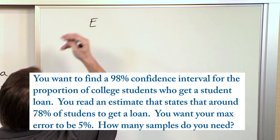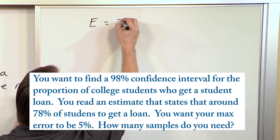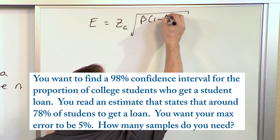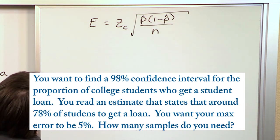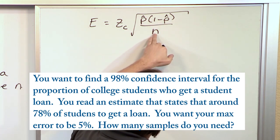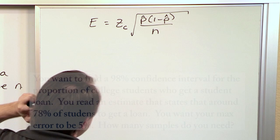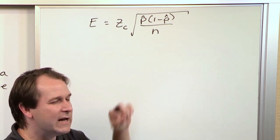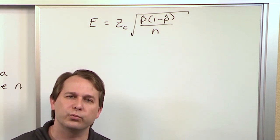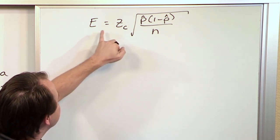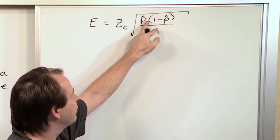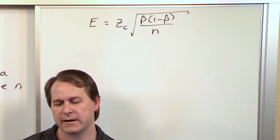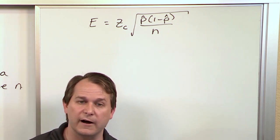You know that the margin of error is equal to this critical value z_c times the square root of p̂(1-p̂)/n. This is the sample proportion, this is the number of samples, and this is the critical value. But what we're trying to find out is how many samples do I need? That's the number n. We don't want to find E, we want to find what n is.